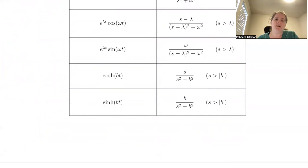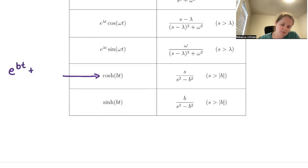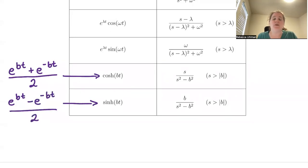Some things to keep in mind: your hyperbolic cosine and hyperbolic sine — just a reminder of how those are defined. Hyperbolic cosine of bt is e to the bt plus e to the negative bt, over two. Hyperbolic sine of bt is e to the bt minus e to the negative bt, over two.